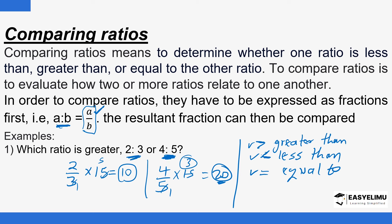So four is to five is greater than two is to three. Conversely, two is to three is less than four is to five — since 4 over 5 gives us 20 and 2 over 3 gives us 10. You can use either the greater-than or less-than symbol, but use it appropriately. For example: two is to three is less than four is to five. You can also use words to describe that comparison.